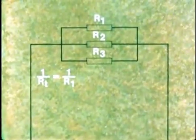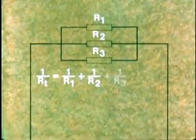The formula is 1 over RT equals 1 over R1 plus 1 over R2 plus 1 over R3.